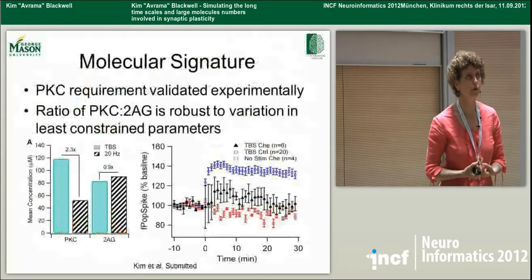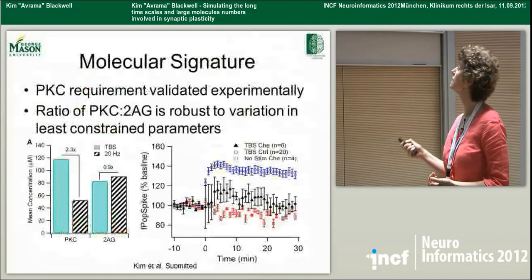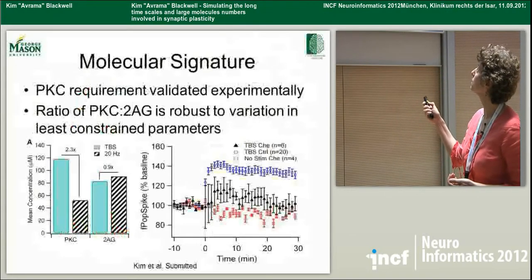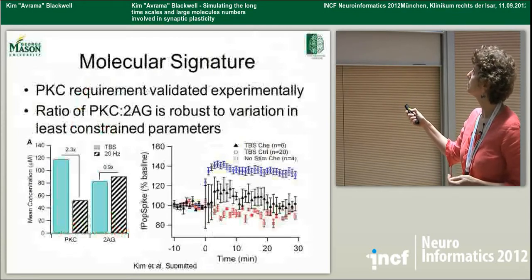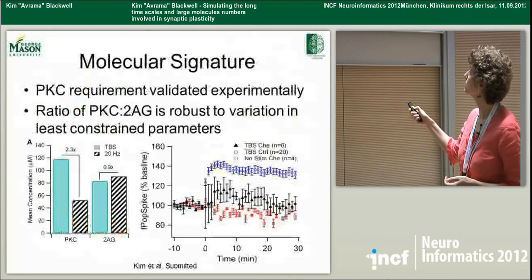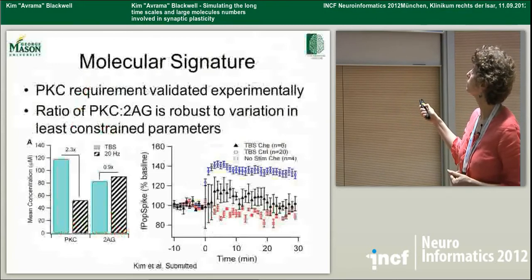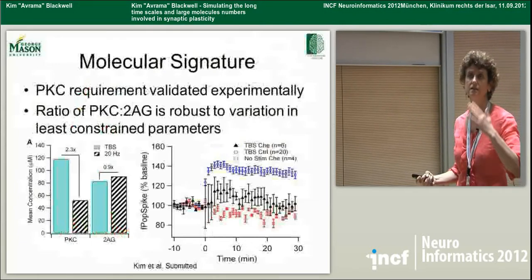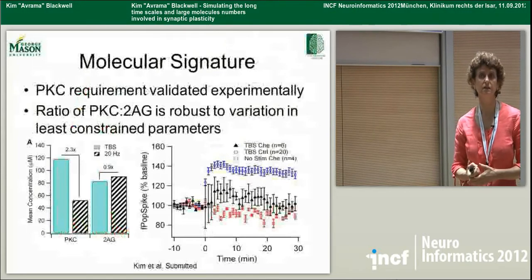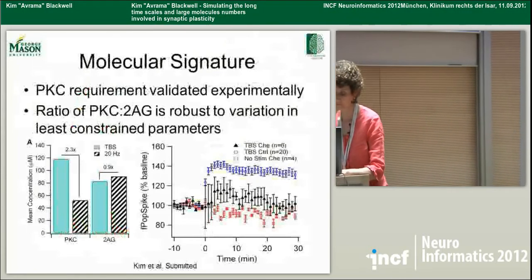We also want to validate whether PKC is really required for this type of LTP. Here's the experiment: theta burst with no PKC inhibition gives LTP. If we add a PKC inhibitor, Calphostin, we see that we do not get LTP anymore. And this is our non-stimulated control with Calphostin in the bath, to show that this effect is not just some non-specific decrease in our ability to produce LTP.